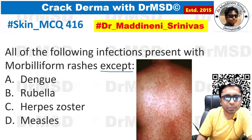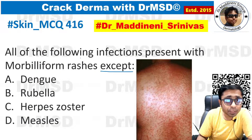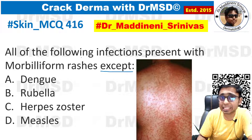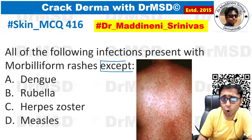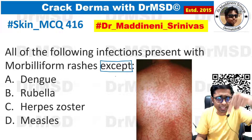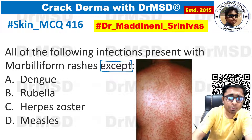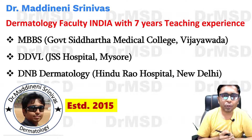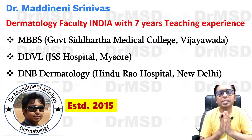Today's MCQ: all of the following infections present with morbilliform rashes except — you need to identify the odd man out. If you know the answer, please leave it in the comment section below. Welcome to the YouTube channel. I'm Dr. Majin Shinwar.